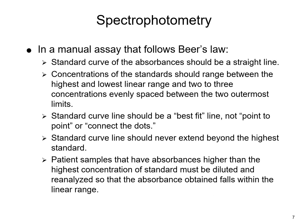Anytime you do a manual assay using the spectrophotometer, you follow Beer's Law and use linear graph paper. The standard curve from the standards produces a straight line. Concentrations should range between the highest and lowest of the linear range with two to three evenly spaced concentrations in between. Although the line should be straight, you may occasionally need a best-fit line rather than connecting the points exactly, because data can be slightly skewed.